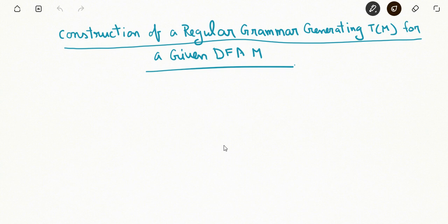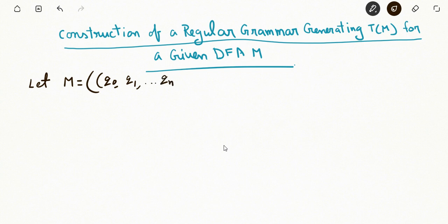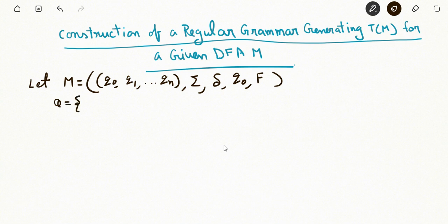Welcome to the next video on FLAT. In this video we are going to see the construction of a regular grammar generating the language for a given DFA M. Let M be that DFA, represented as a 5-tuple: M = (Q, Σ, δ, q₀, F). Q consists of states q₀, q₁, ..., qₙ, then sigma is the input alphabet, then delta, q naught, and F.